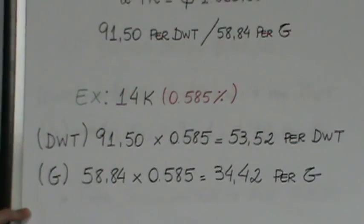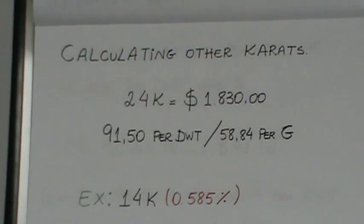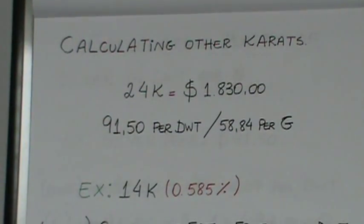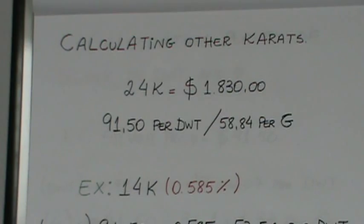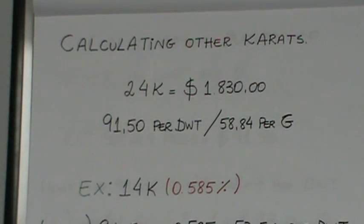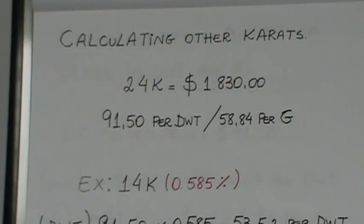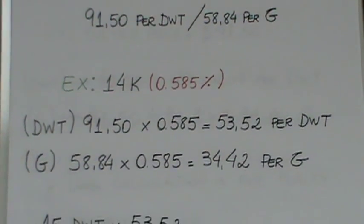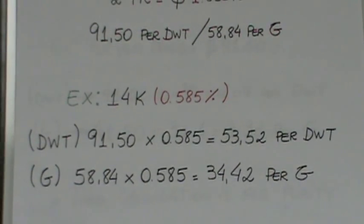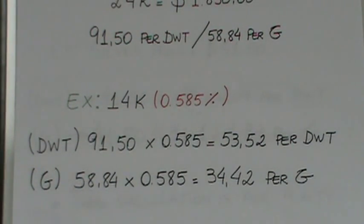Now, using this as a basis, let's do some calculations for 14 karat. We know, again, we're using the same $1,830. When you break that down, it's $91.50 per pennyweight or $58.84 a gram. So let's just take that pure pennyweight price and times that by 0.585 for 14 karat gold. We know 14 karat gold is 58.5% gold.